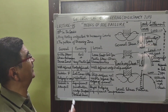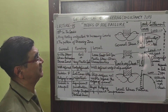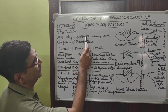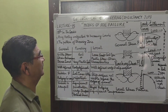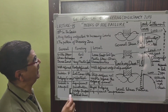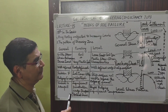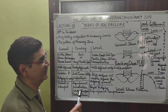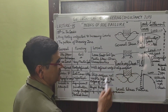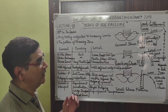Hello dear friends, welcome again to my channel Geotechnical Engineering Consultancy Tips. Today's lecture is on the modes of soil failure — how do we define the modes of soil failure. Soil fails in three patterns: first is the general shear failure, second is the punching shear failure, and the third is the local shear failure.